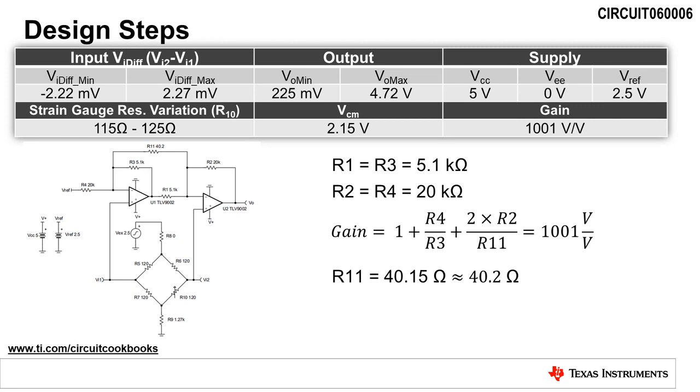Solving this equation for R11, we see that we need a resistor value of 40.15 ohms to set the gain of 1001 volts per volt. For this design, we will use the closest standard resistor value of 40.2 ohms.